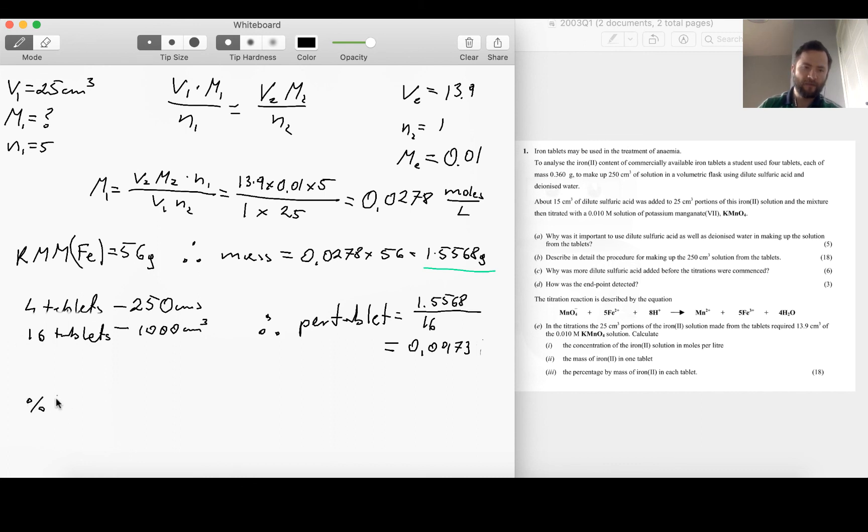So then percentage iron is equal to mass of iron in the tablet, 0.0973, per mass of the tablet which is 0.36. And if I calculate that I'm going to get the percentage of iron is equal to 27.02%.